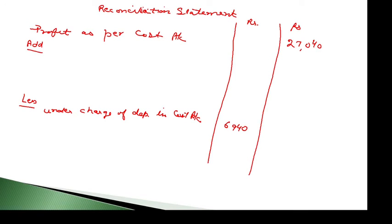Next is stock valuation. For opening stock, in cost accounts it is 2,75,100 and in financial accounts it is 2,55,000. Opening stock is written on the debit side. In financial accounts, there is a lesser amount on the debit side, so our profit has increased there. In cost accounts there is more — 2,75,100 versus 2,55,000 — so our profit expense is higher and profit is reduced. We write 'over valuation of opening stock in cost accounts' and add this amount.